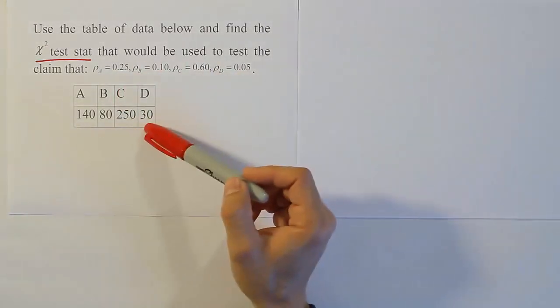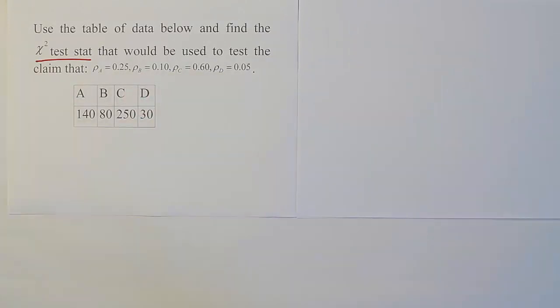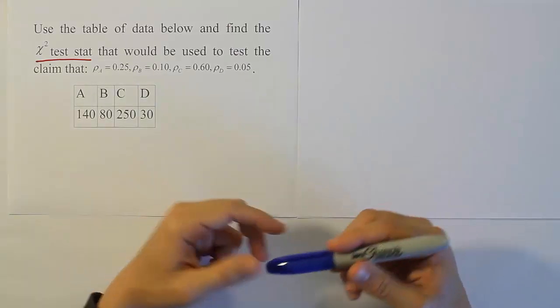Okay, so there is our table of data. We have our probabilities provided under the null hypothesis. At this point, what we want to do is to come up with the formula for the chi-squared test stat.